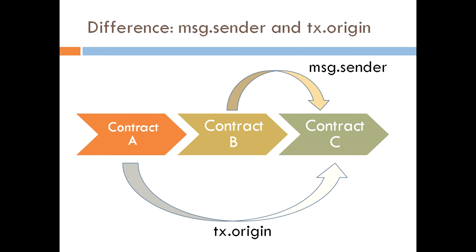This is a major difference to remember: message.sender returns who is directly calling contract C, which is contract B, not contract A. But transaction.origin returns where the transaction was originally initiated, which is contract A, not contract B. This is the key difference between message.sender and transaction.origin.